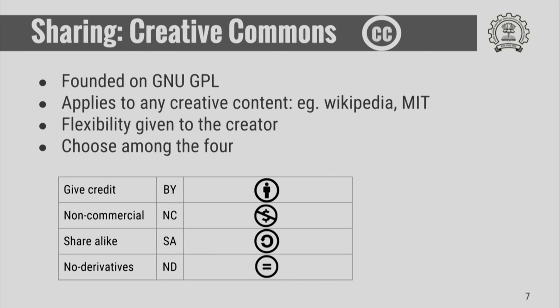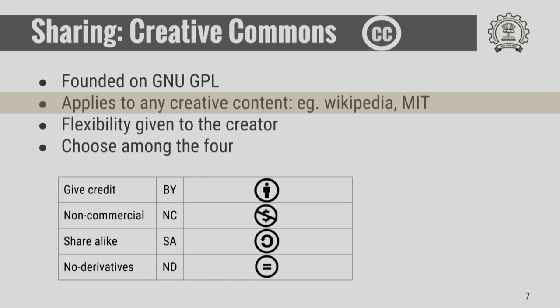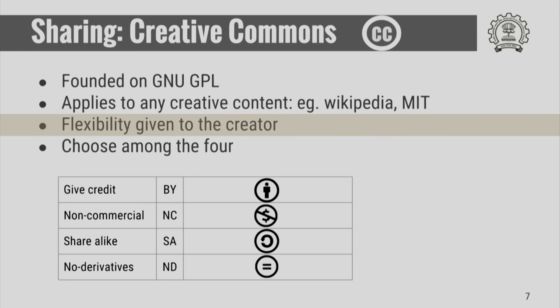That was for software, but now it has been adapted to a lot of other creative work. That is called creative commons licensing, written with a double C — CC — very similar to the copyright symbol. Creative commons is founded on the GNU GPL licensing and applies to any creative content. For example, Wikipedia is a very famous example. MIT courseware and this very lecture that you are seeing are all under creative commons licensing. The advantage of creative commons licensing is that it gives the license holder the flexibility to decide what kind of sharing they desire.